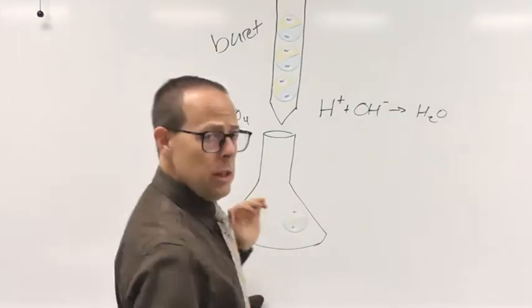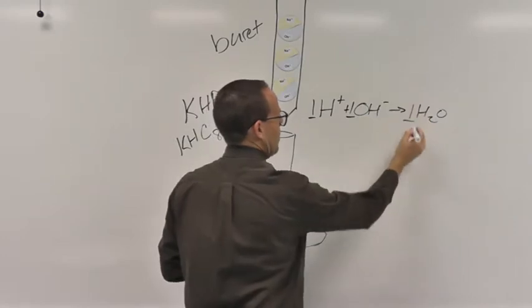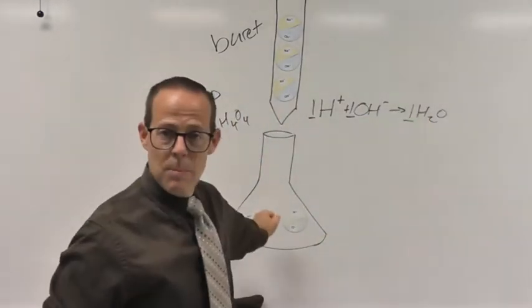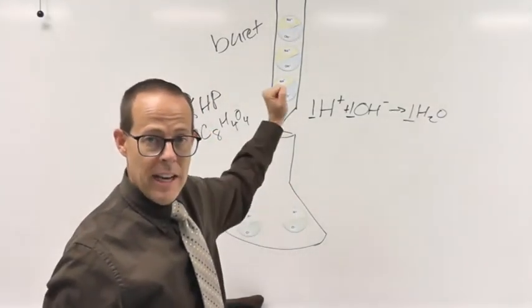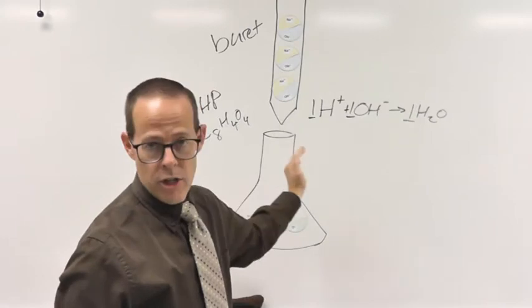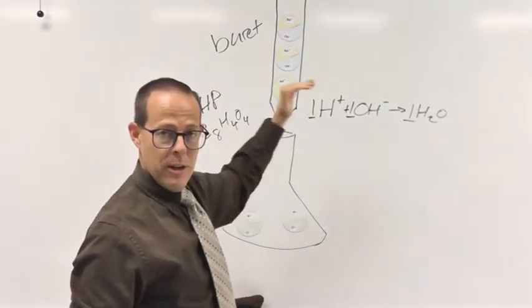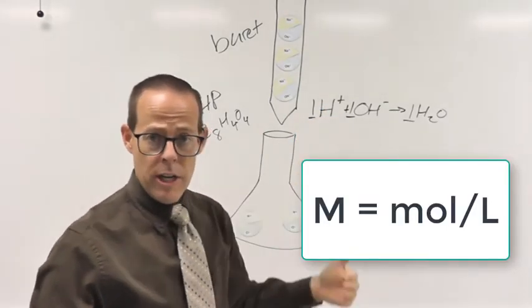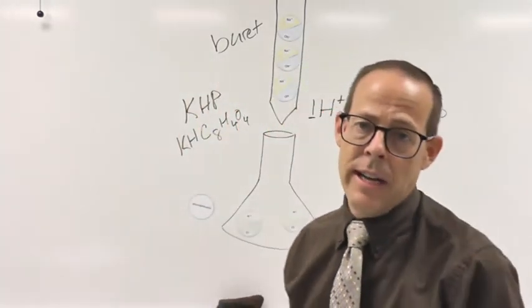We use KHP because this is in a one-to-one stoichiometric relationship. So if we know the moles of KHP we had, we can easily calculate the moles of NaOH that we used because it's a one-to-one ratio. And if we know the volume of NaOH we used, if we know moles of NaOH and volume of NaOH, we can get concentration or molarity of NaOH very easily. So once we've standardized our NaOH,